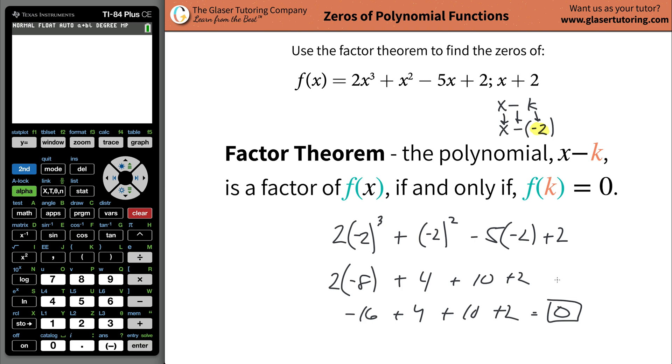So what that means now is since I evaluated the function at the value of k and it equals zero, that means this thing x minus k or this thing here is going to be a factor. All right.